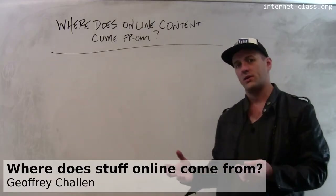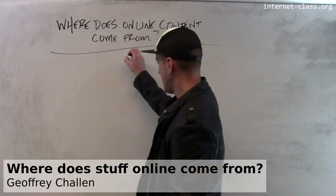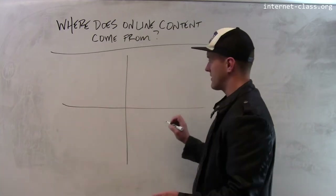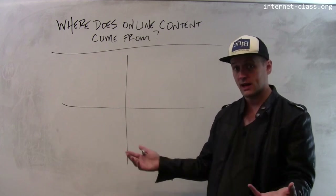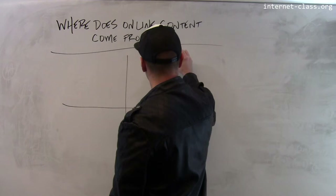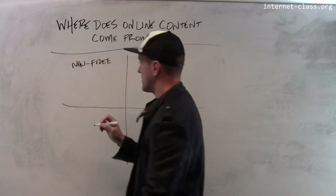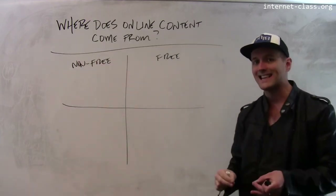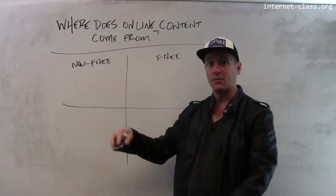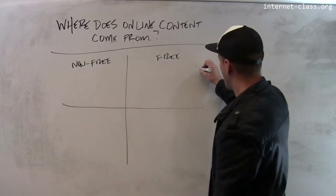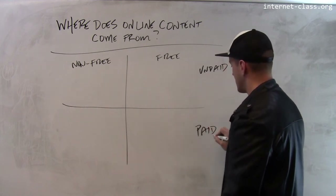When we think about all the content that's available on the internet, it's interesting to break it down along two different axes — dividing internet content into four quadrants. One division is between content that's freely available and content that's non-free. The second division is whether or not the person who created the content was paid in some way for creating that content, which doesn't necessarily mean they were paid by you.